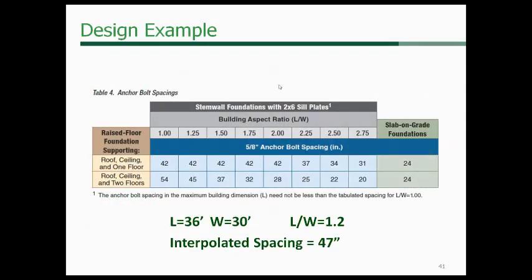Starting with Table 4 for anchor bolt spacings for a 5/8-inch anchor bolt: our raised floor foundation supports a roof, ceiling, and two floors. Our length-to-width ratio is 36 divided by 30, giving an aspect ratio of 1.2. Interpolating, the required spacing is 47 inches for our anchor bolts. The language above the table also requires 3x3 plate washers with 5/8-inch anchor bolts for the 140 mph wind speed, so make sure to read all the text as well.